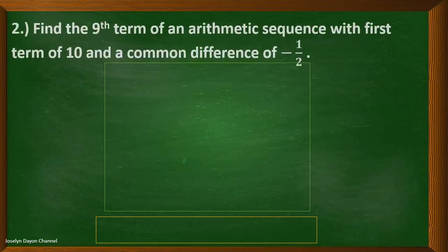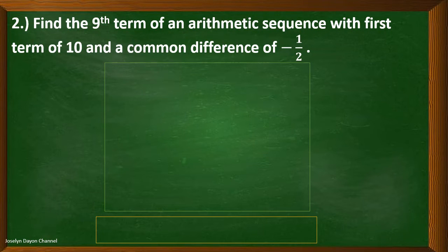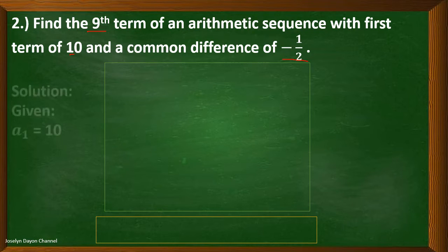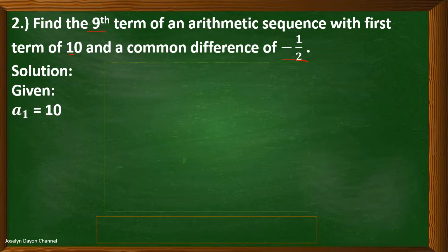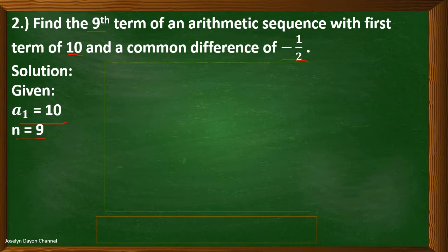Now let's have the second example. Find the ninth term of an arithmetic sequence with a first term of 10 and a common difference of negative 1. The given data: the first term is 10, n is equal to 9 because we are asked to find the ninth term, and the common difference is negative 1.